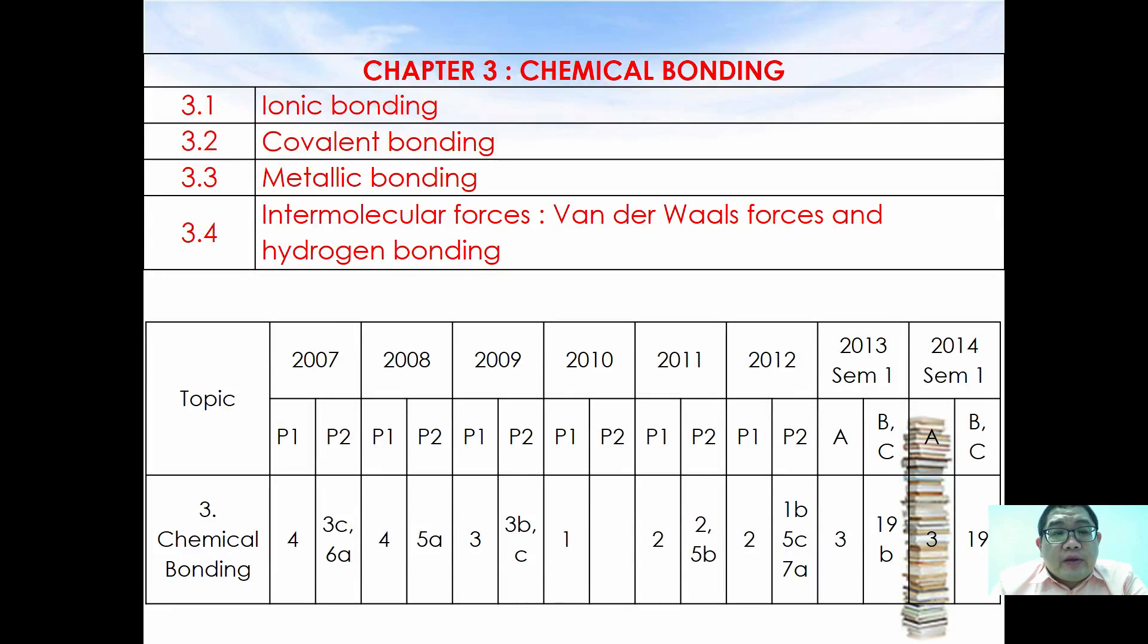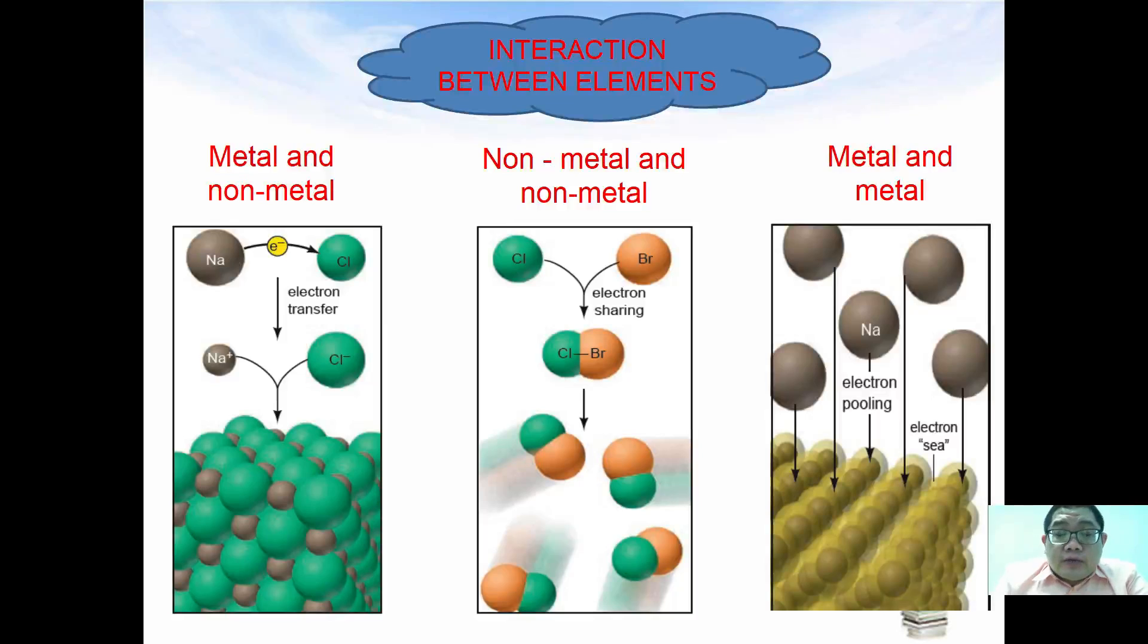In this chapter we are going to learn about ionic bonding, covalent bonding, metallic bonding, and also intermolecular forces which is van der Waals forces and hydrogen bonding. Through past question analysis you can see that chemical bonding is one of the very basic chapters that you all have to understand.